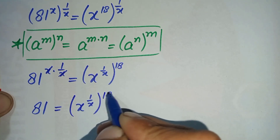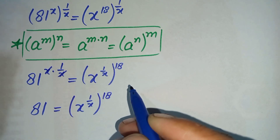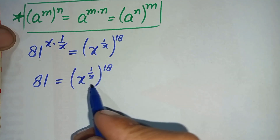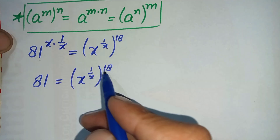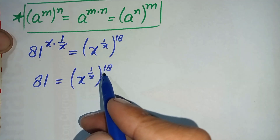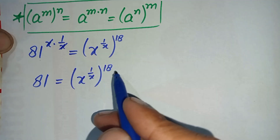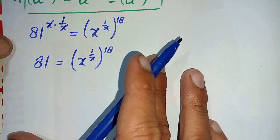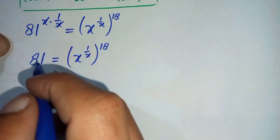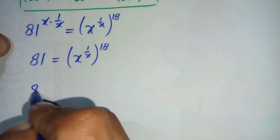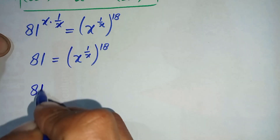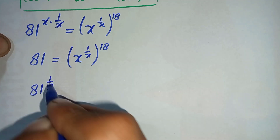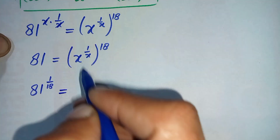Our next target is to eliminate 18 from the right hand side. To eliminate this 18, we will take 1 over 18 in the power on both sides. So the equation will become 81 raised to power 1 over 18 is equal to x raised to power 1 over x, whole raised to power 18, raised to power 1 over 18.